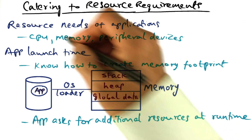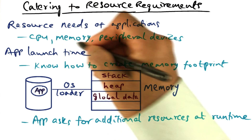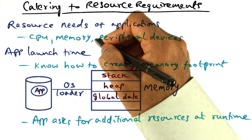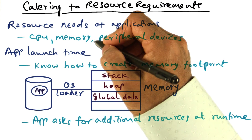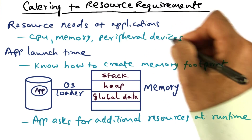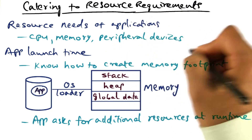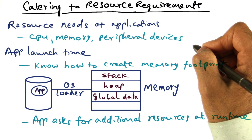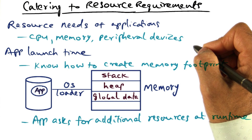The resource needs of applications include time on the CPU, the memory needed for holding instructions and data, and peripheral devices that may have to be accessed during the course of execution.